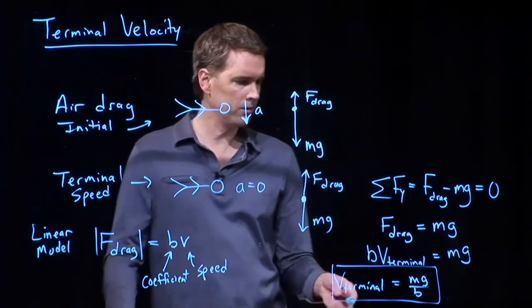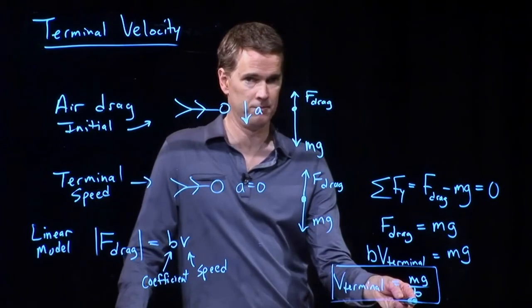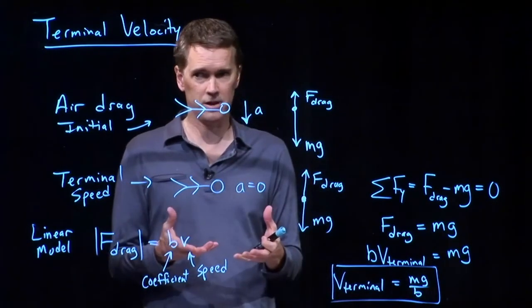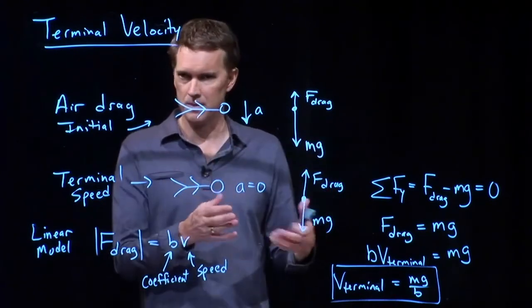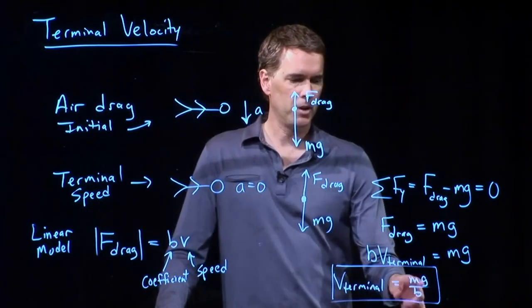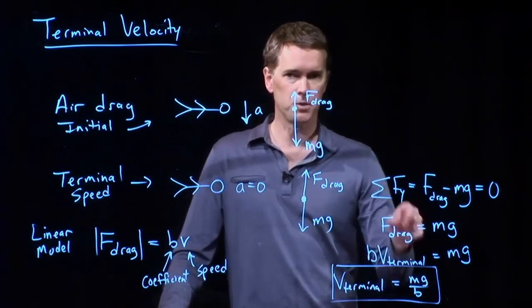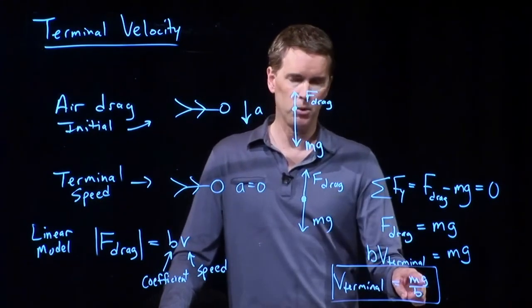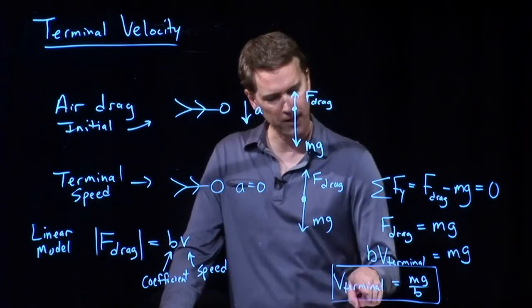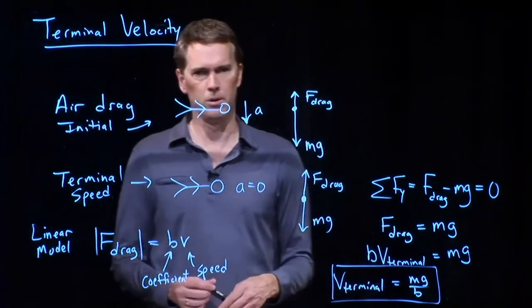And it's because B is the same for those two things. If they have the same size, same cross-sectional area, they're going through the same density of air, this coefficient is exactly the same. But obviously, the force due to gravity is much bigger on the bowling ball than it is on the balloon. And so you'll have a bigger terminal speed for the bowling ball.